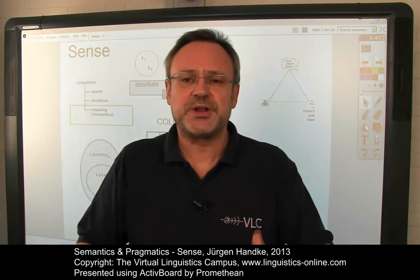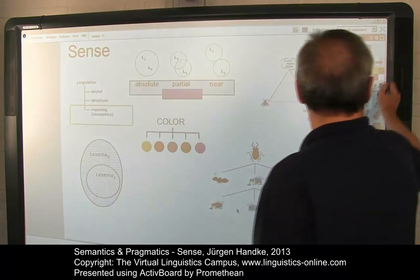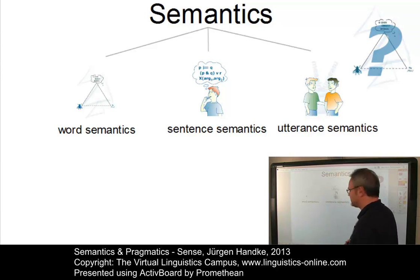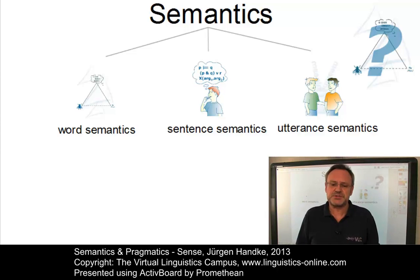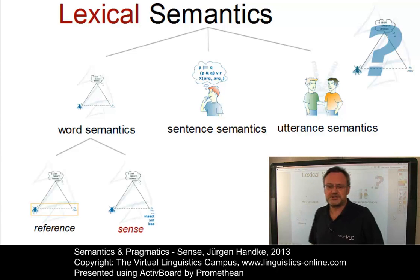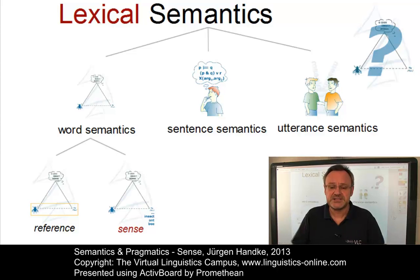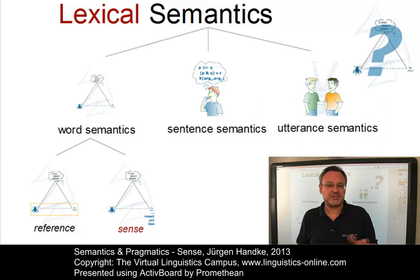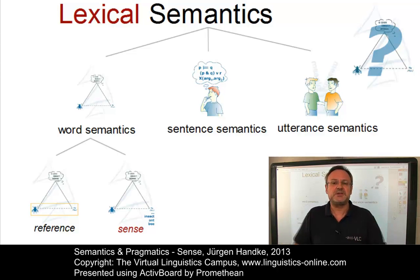Let us first of all locate the topic of sense relations within semantics. Within semantics, with its main branches of word semantics, sentence semantics, and utterance semantics, word semantics seeks to explain the phenomenon of meaning in natural language by defining the nature of word meaning. There are two ways of looking at word meaning, resulting in two branches: reference or referential semantics, and sense or lexical semantics. While reference deals with the relationship between linguistic elements and the non-linguistic world of experience, sense relates to the complex system of relationships that hold between the linguistic elements themselves — it is concerned only with intra-linguistic relations.